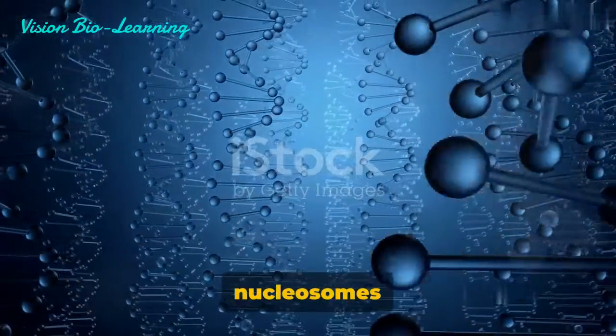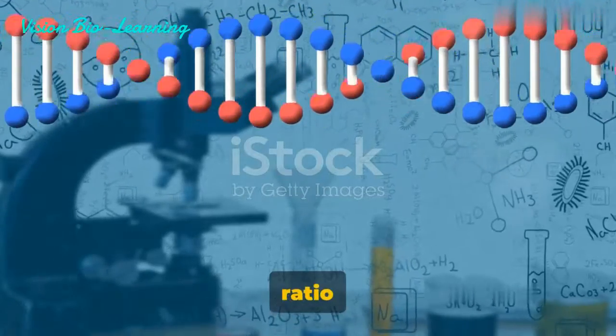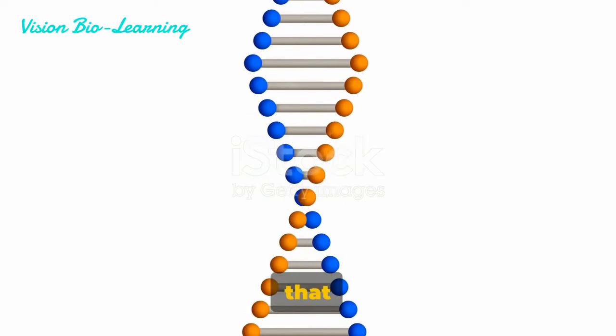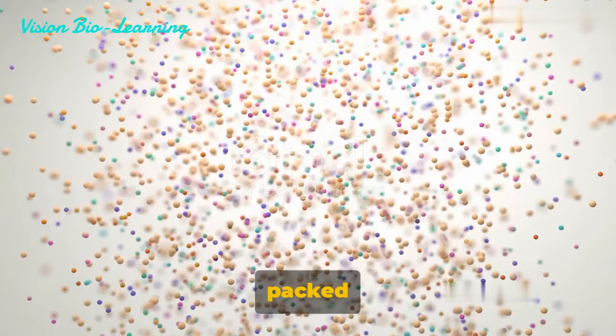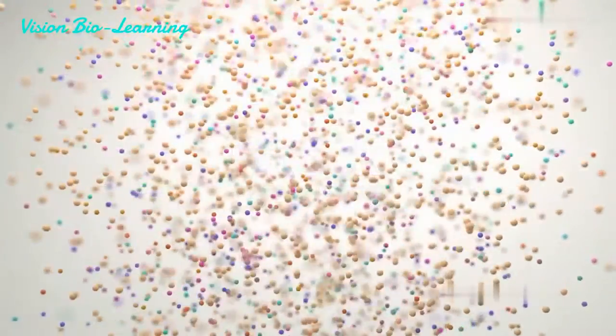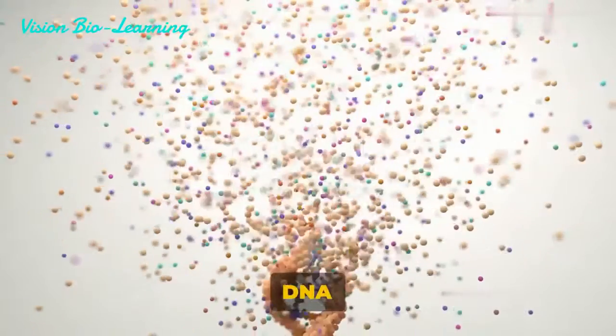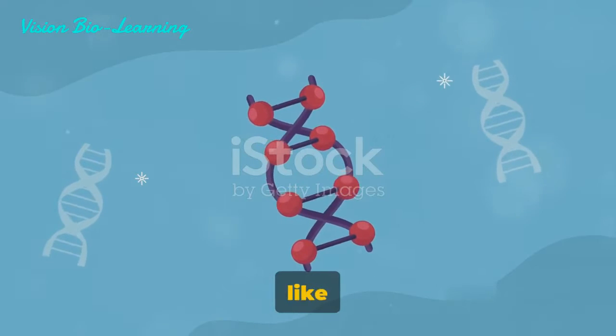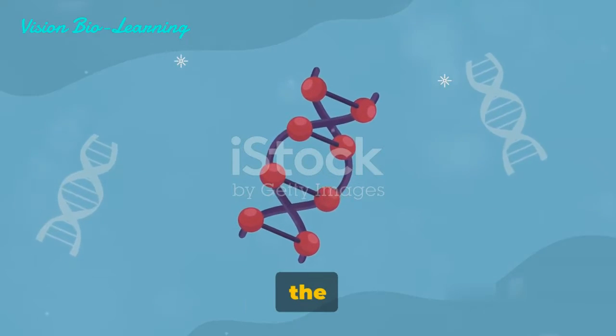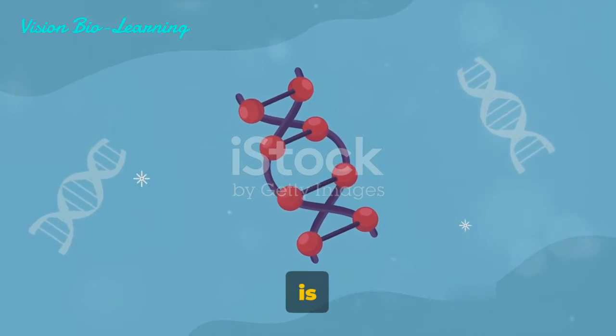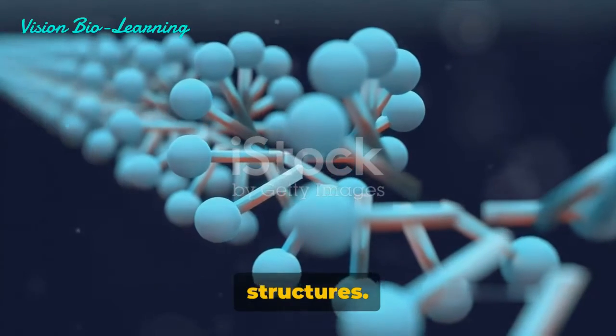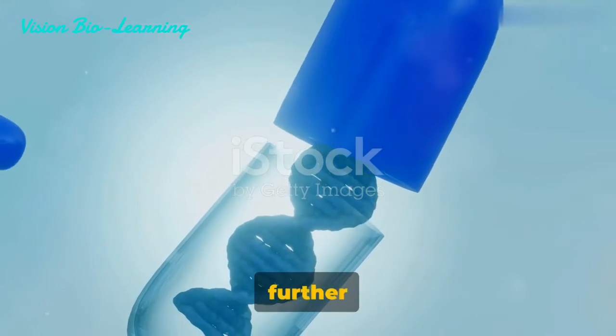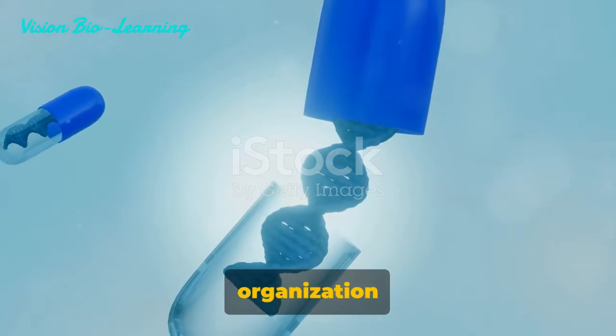This is where the formation of nucleosomes comes in. In chromosomes, the ratio of DNA to histones by weight is approximately 1 to 1. This balance ensures that the DNA is efficiently packed around the histones, forming nucleosomes. Each nucleosome consists of a segment of DNA wound around 8 histone proteins, like thread around a spool. And just like that, with the aid of histones, the long, winding DNA molecule is neatly packed into compact, orderly structures. These nucleosomes represent the first level of DNA packaging, providing the foundation for further compaction and organization within the chromosome.